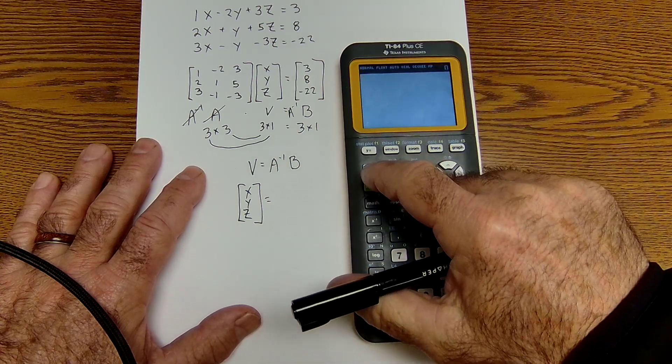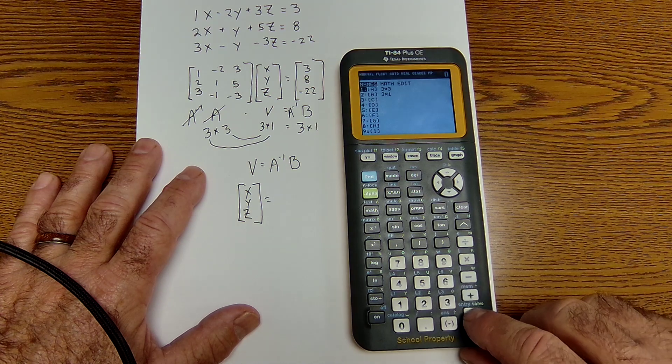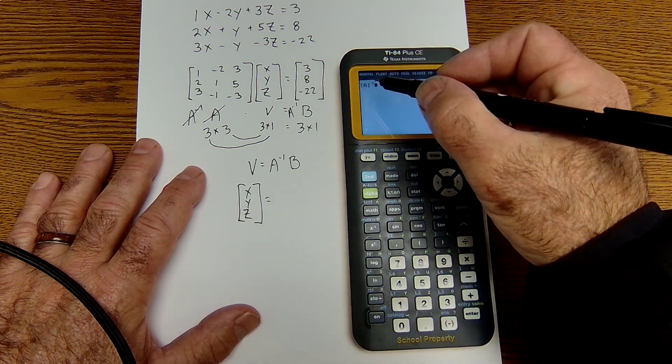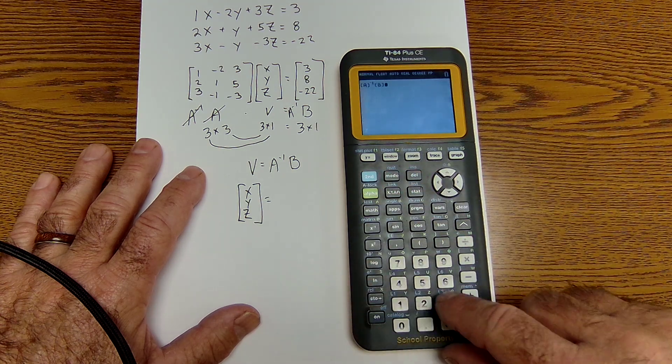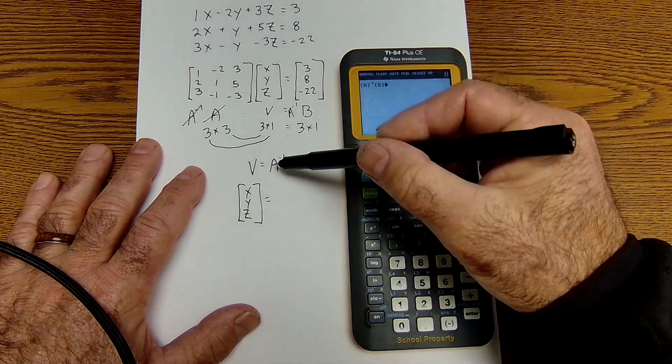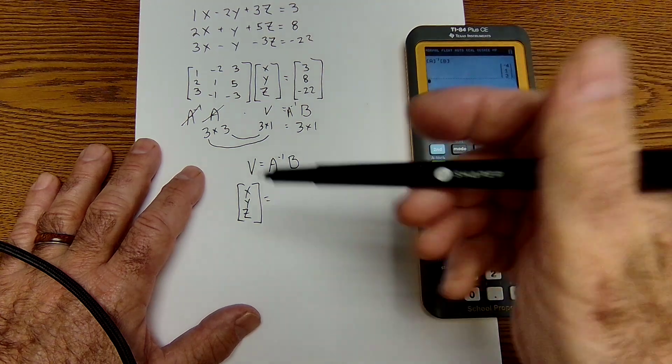So we'll go over here and go matrix number 1 is A, the inverse. So I have A, the inverse, matrix 2, the inverse of A times B. The inverse of A times B is equal, and then there's my solution.